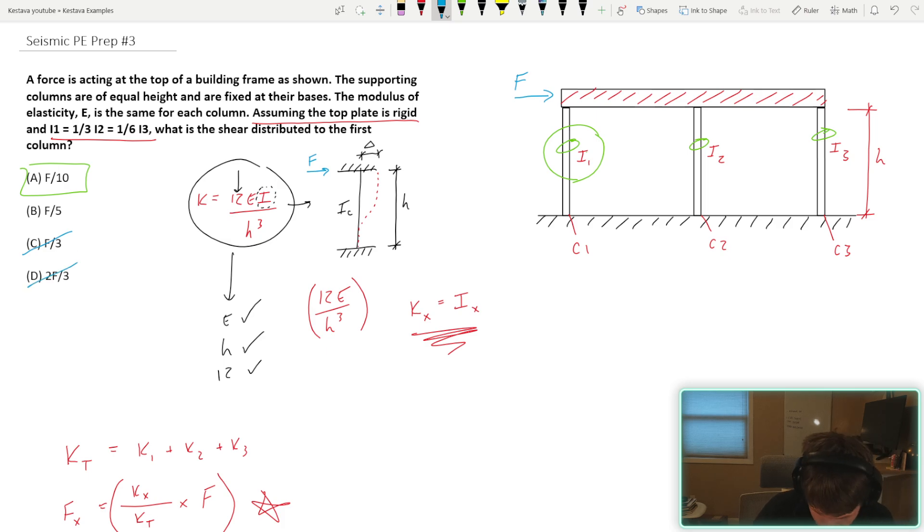Two thirds is also, you know, that's the biggest amount of load going to the column. It can't be that one. And then you're left with two possible solutions that make sense just without even running any calculations. So something to think about at a high level.